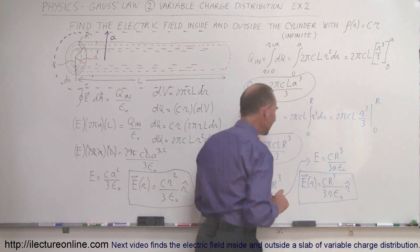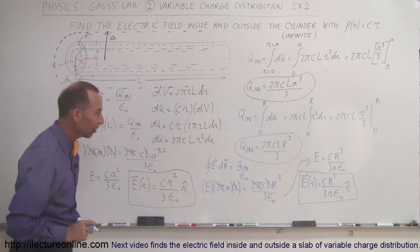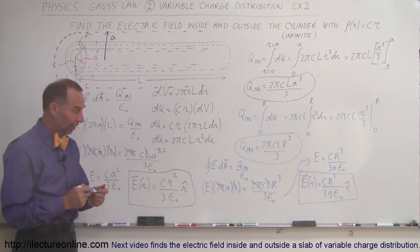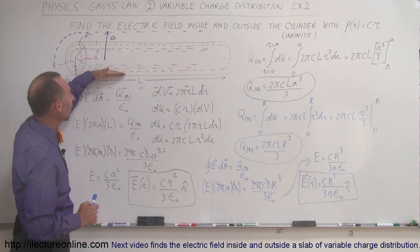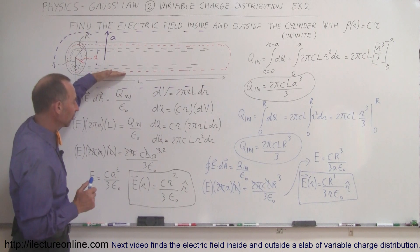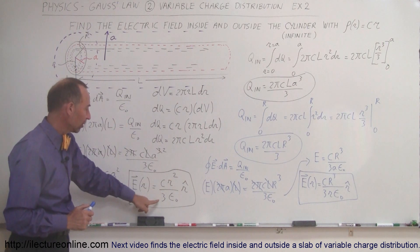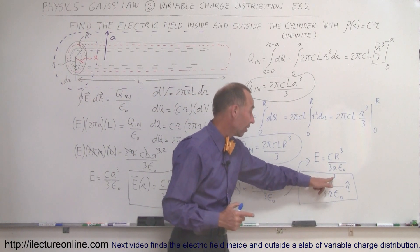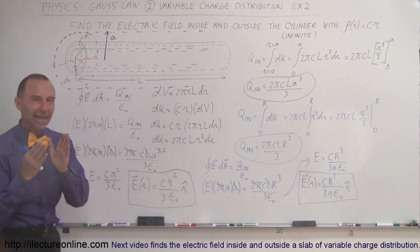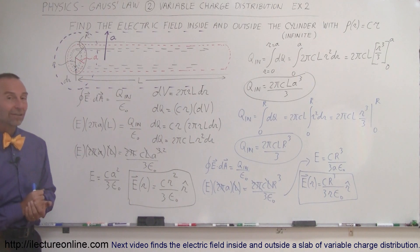As a quick verification, let's check that the two equations are equal at the surface of the cylinder, where A equals R. Plugging A equals R into the inside formula gives C R squared divided by 3 epsilon sub nought. For the outside formula, R cubed divided by R gives R squared, so that's also C R squared over 3 epsilon sub nought — the exact same value at the surface. This confirms the answers are consistent, and that's how we find the electric field of a cylinder with variable charge density.